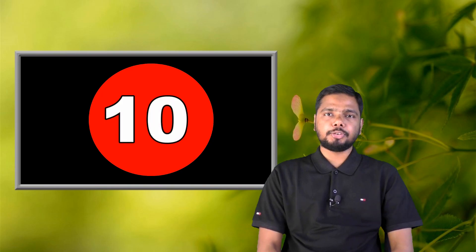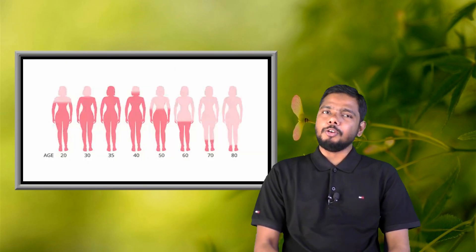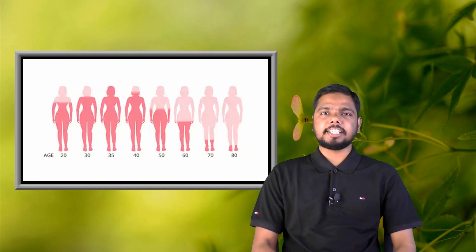Most women begin their menstruation between the ages of 10 to 15 years old, and at the same time they start to ovulate and become able to conceive. Ovulation naturally stops after menopause, between the ages of 50 to 51 years, but sometimes it can also happen before menopause — this process is referred to as pre-menopause. There are a few symptoms of ovulation.